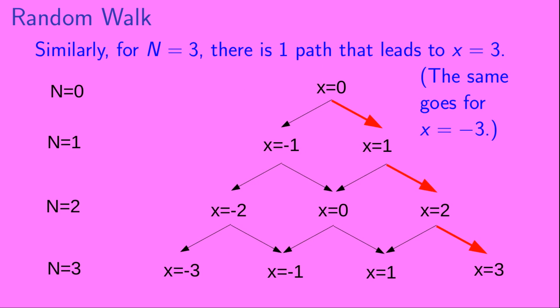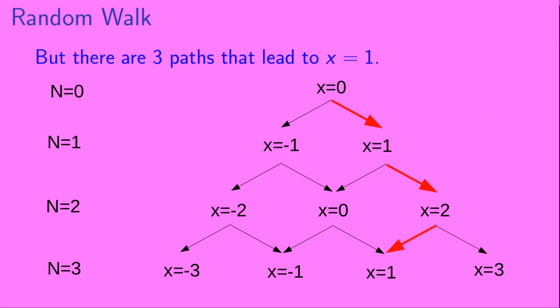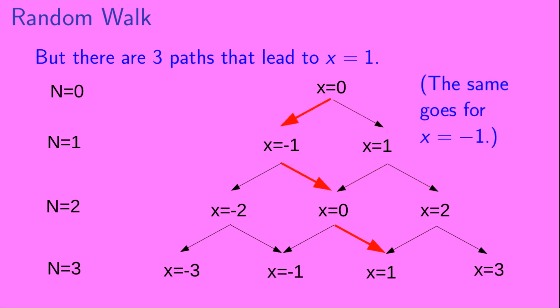Similarly, for n equals three, there is one path that leads to x equals three, and there is also only one path that leads to x equals minus three. However, there are three paths that lead to the ending location x equals one. The object can go right, right, then left; or right, left, then right; or left, right, then right again. And the analogous situation holds for the object ending up at x equals minus one.